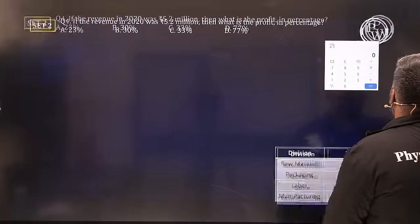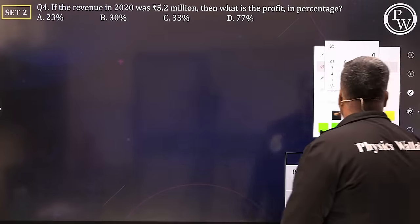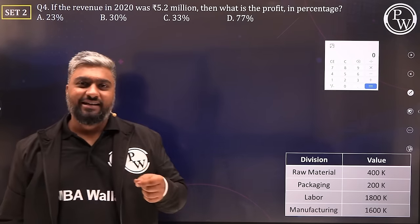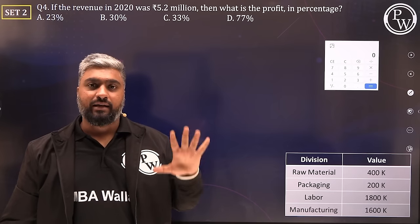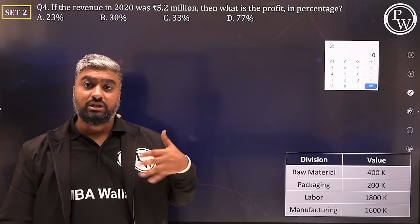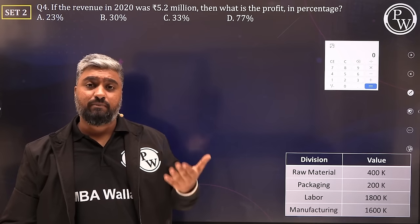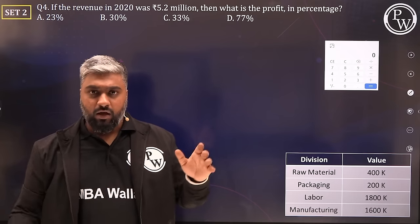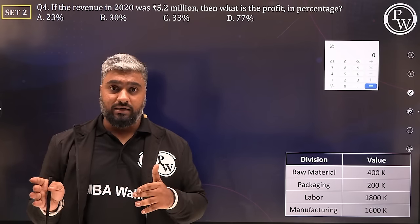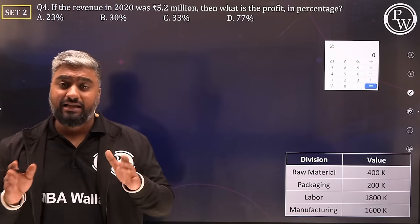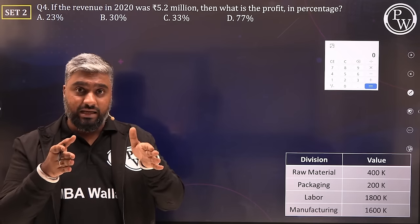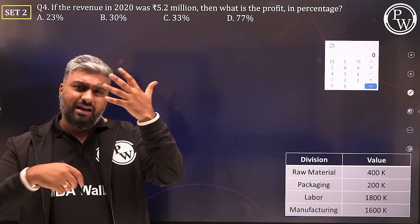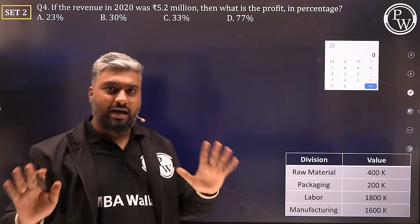This is a very common trap that question setters use. Only people solving hastily fall for it. You have to be quick, but not hasty — there's a big difference. Quick means increasing speed while keeping focus. Hasty means rushing without understanding. Do not make assumptions — if no data is given, you cannot use it.